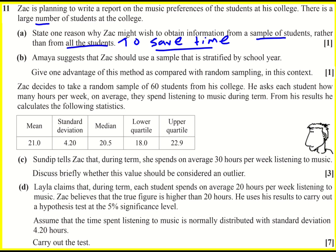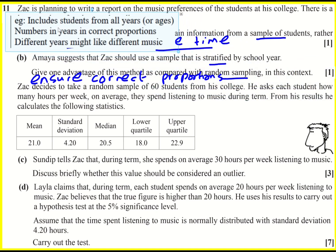Part B: Amaya suggests that Zach should use a sample that's stratified. What is the advantage over this as opposed to random sampling? So random sampling, everyone has the same chance of being picked. You could get every single possible kind of arrangement of people in your sample. That's actually somewhat of a disadvantage because there is a chance you could just pick the youngest year group and not represent the whole group. Basically, stratified will ensure correct proportions. We still have an element of randomness, but we ensure we get the right number of students in each year. The mark scheme says include students from all years, will guarantee this, numbers in the correct proportions, or that different years might like different music.